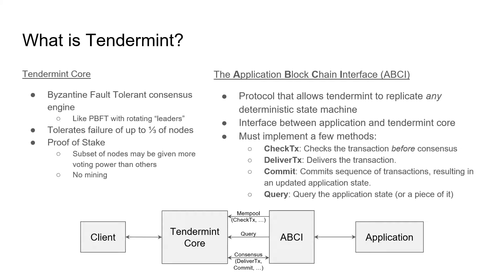DeliverTransaction is what they call the workhorse of your application. This is the method that takes a transaction and modifies your application state. In a cryptocurrency application, for example, it might check account balances and then change the state accordingly. DeliverTransaction gets called for every transaction in the block, and then Commit is called. Commit persists the application state and is responsible for computing the hash of the application state and returning it. This hash can later be used to validate queries.